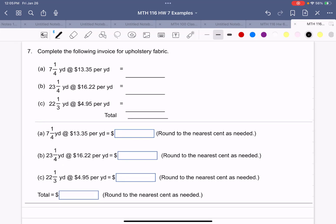Example number seven. Complete the following invoices for upholstery fabric: 7 1/4 yards at $13.35 a yard, 23 1/4 at $16.22 per yard, and 22 1/3 at $4.95 per yard.